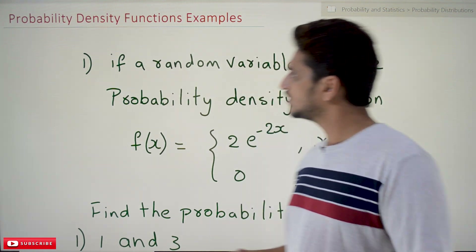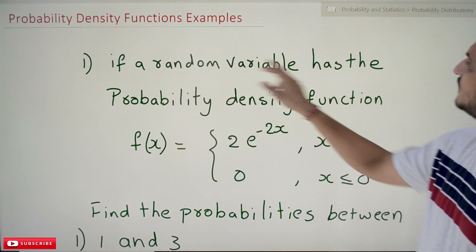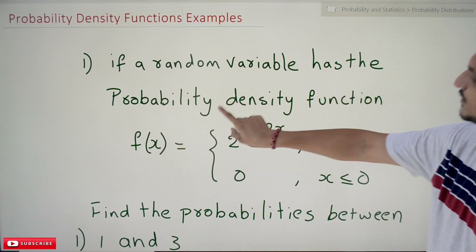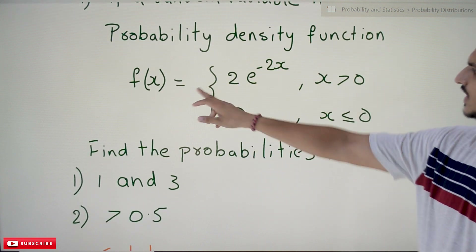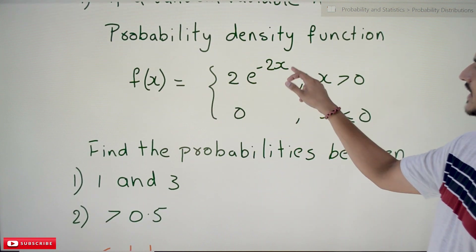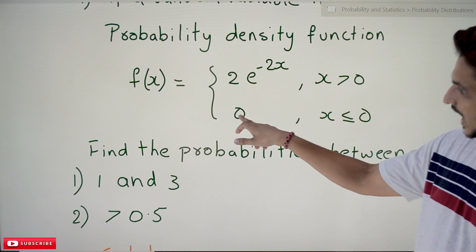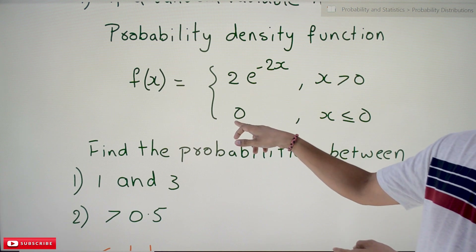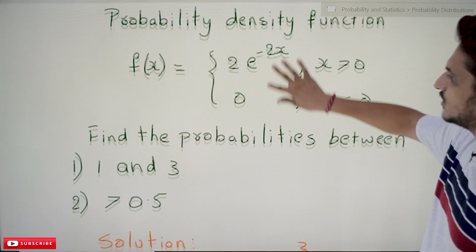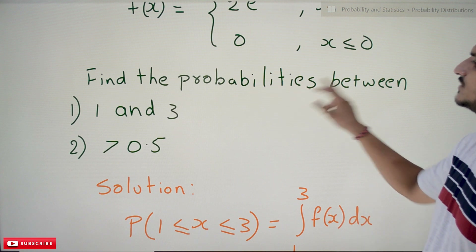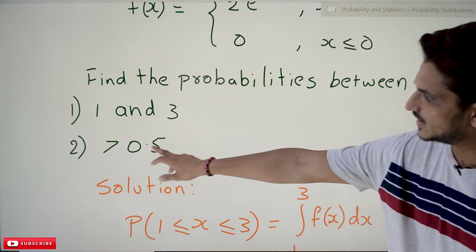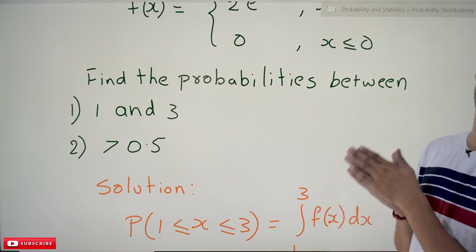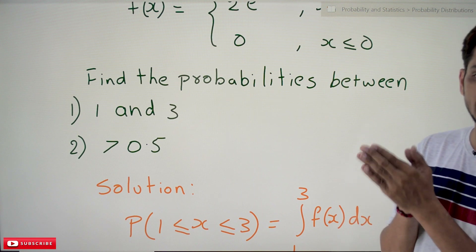Coming to today's examples. The first one: a random variable has the probability density function f(x) = 2e^(-2x) if x > 0, otherwise 0 for x ≤ 0. They are asking: find the probability that x is between 1 and 3, and the probability that x is greater than 0.5.